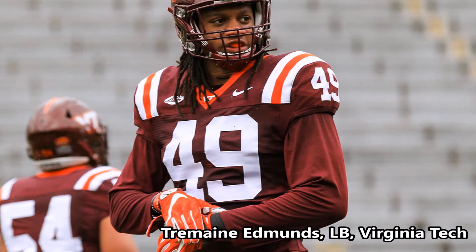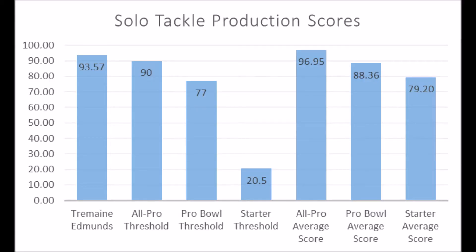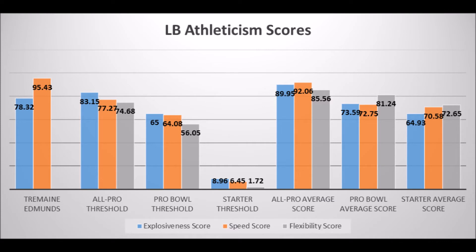Next is Tremaine Edmonds, linebacker out of Virginia Tech. He has a 93.57 in terms of solo tackle production data — a strong production profile with a very good shot at hitting All-Pro and Pro Bowl marks from a production standpoint. On athleticism, he has a 78.32 in explosiveness and a 95.43 in speed. He doesn't quite have All-Pro-level explosiveness or body strength, but he does have a very good speed score and Pro Bowl-level explosiveness. Edmonds has a very good shot to be a Pro Bowl linebacker or better, and definitely a long-term starter based on his production and athleticism traits.